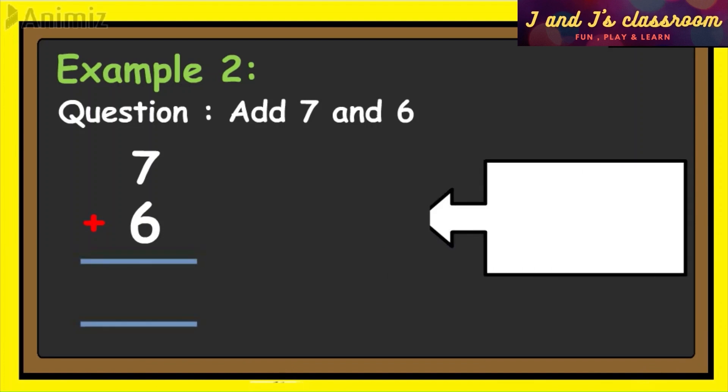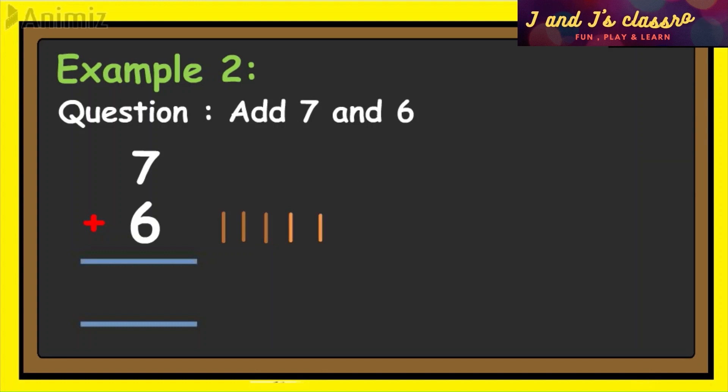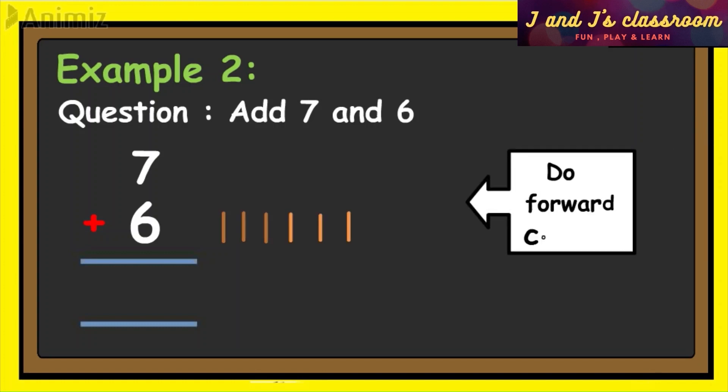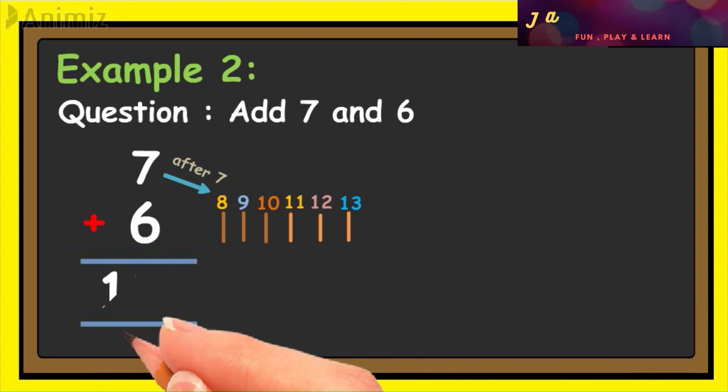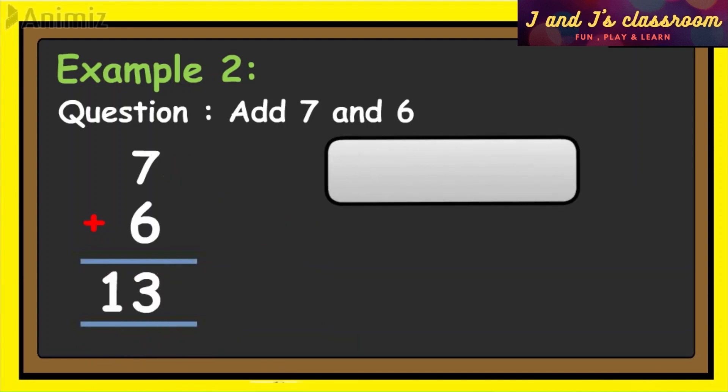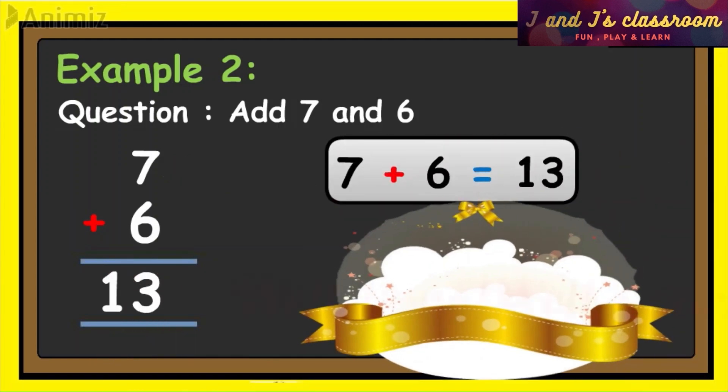Now draw sticks for second addend values. One, two, three, four, five, six. Now do forward counting. After seven: eight, nine, ten, eleven, twelve, thirteen. Now write number thirteen. So when we add seven plus six is equal to thirteen.